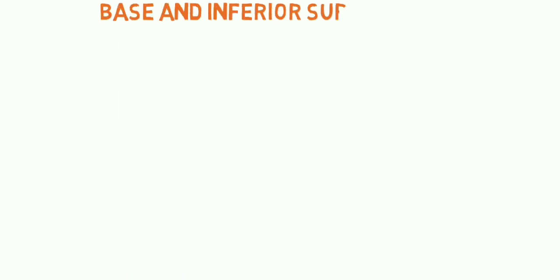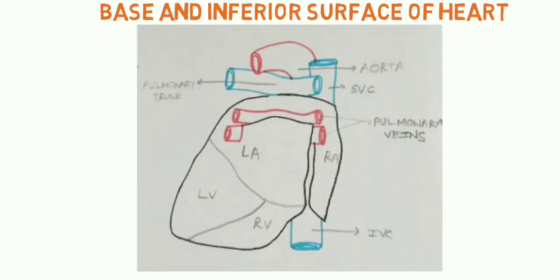Now let's see the base and inferior surface of the heart. In this picture you can see that most of the base of the heart is formed by the left atrium and a part of the right atrium. Most of the inferior surface is formed by the left ventricle and a part of the right ventricle.